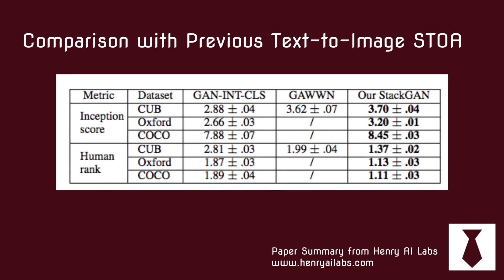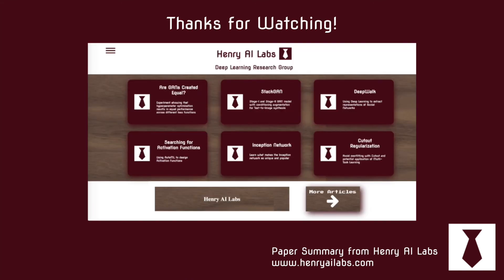This is a comparison of StackGAN with previous state-of-the-art text-to-image methods. It's interesting to think about how you communicate results in GAN research — you can use something like the inception score, which uses a pre-trained inception network to derive metrics, or you can have human evaluators pick which images look most realistic. Thanks for watching — check out Henry AI Labs, there's an article on StackGAN as well as many other articles and surveys on deep learning topics.